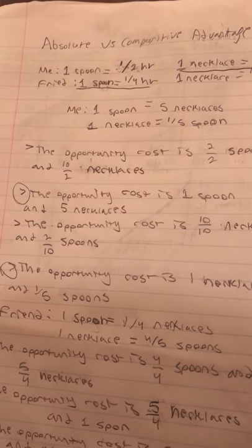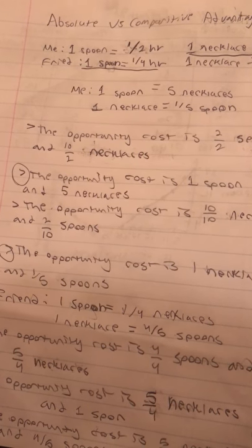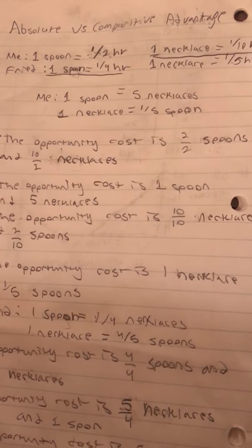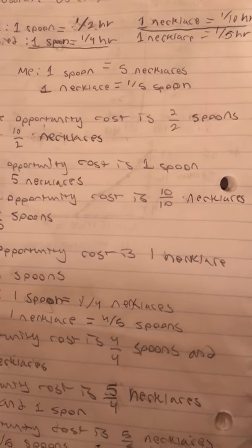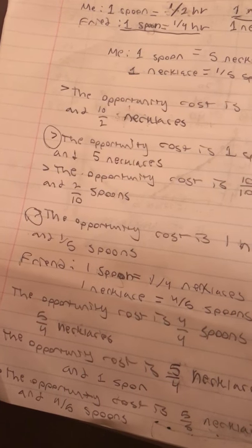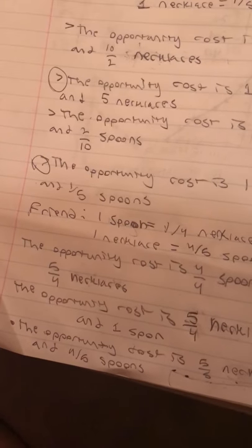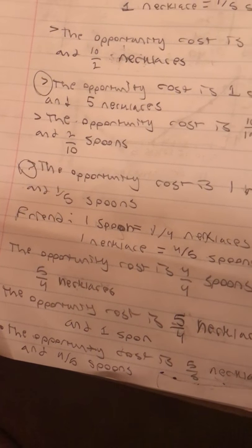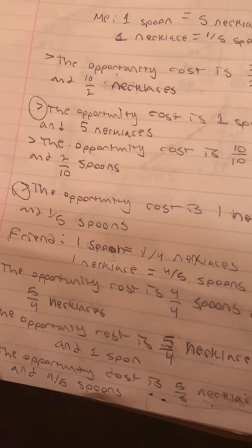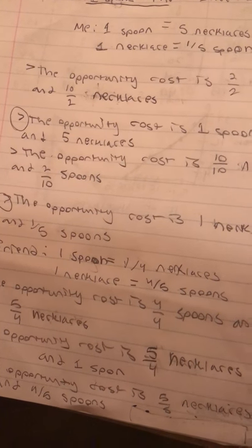The opportunity costs, and then I list that numerical value in the second opportunity cost. And then the opportunity costs for me to make 10 out of 10 necklaces is about two out of 10 spoons. The opportunity costs for me to make one necklace is about one-fifth of a spoon, which is, these are all basically kind of repeating each other, but it's just different ways of saying my opportunity costs.